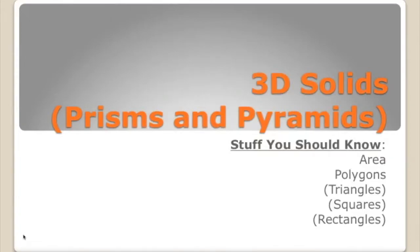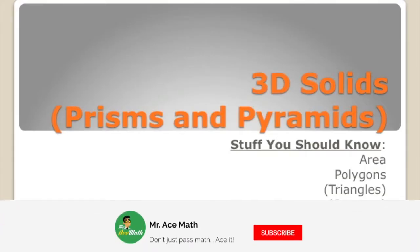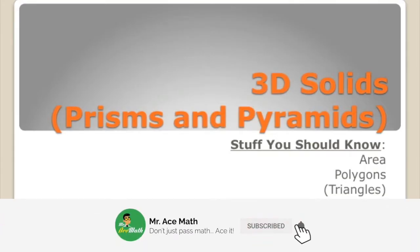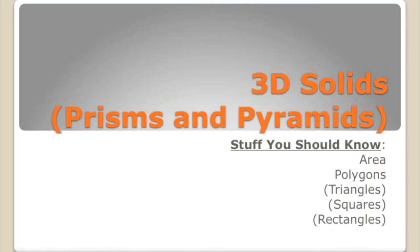Welcome back to Mr. Ace Math. Today we're covering three-dimensional solids. We're not going to talk about every three-dimensional solid — for example, cones, cylinders, spheres. We're basically covering only prisms and pyramids. Some basic stuff you should know is what area is, as well as the different kinds of polygons, most particularly triangles, squares, and rectangles. So make sure you understand those, and let's get started.